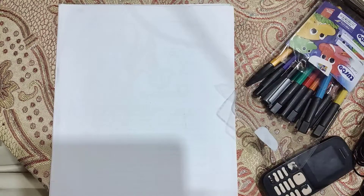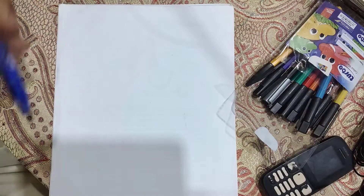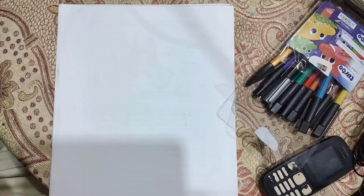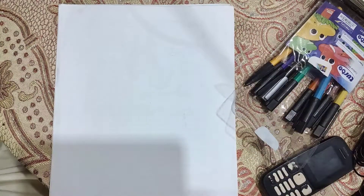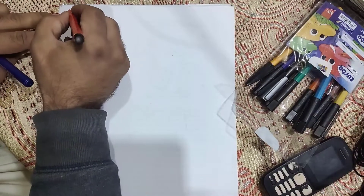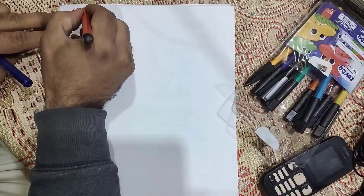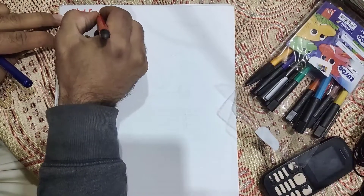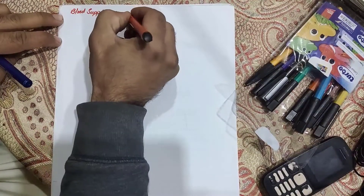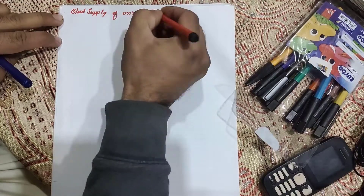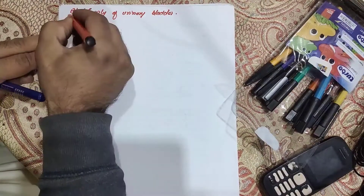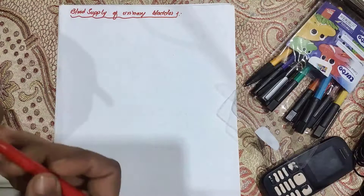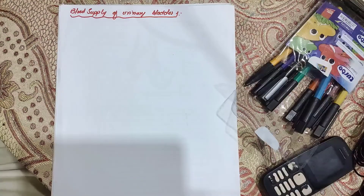Hello dear friends, assalamualaikum and welcome back. We are discussing the urinary system. The previous lecture was about the relations of the urinary bladder. Now in this lecture we are going to discuss the blood supply of the urinary bladder. So blood supply of urinary bladder — from blood supply we mean the arterial supply: which arteries are responsible to supply blood to the urinary bladder.